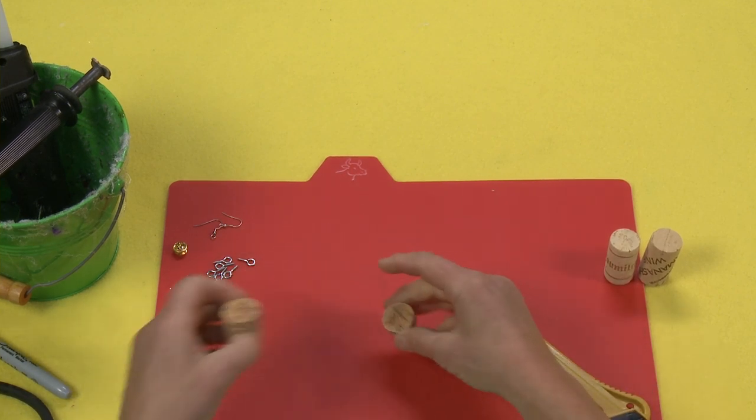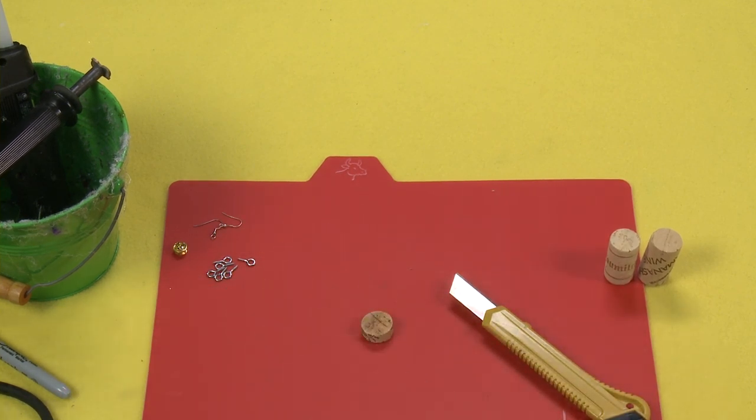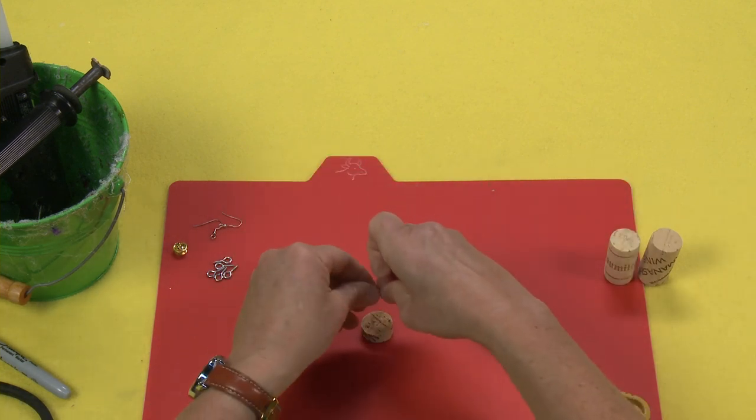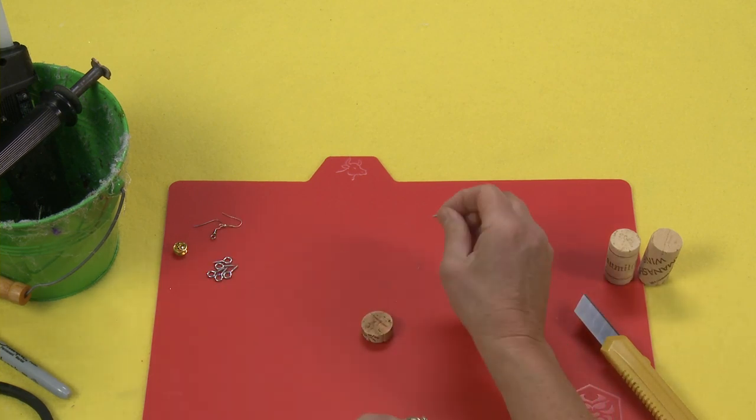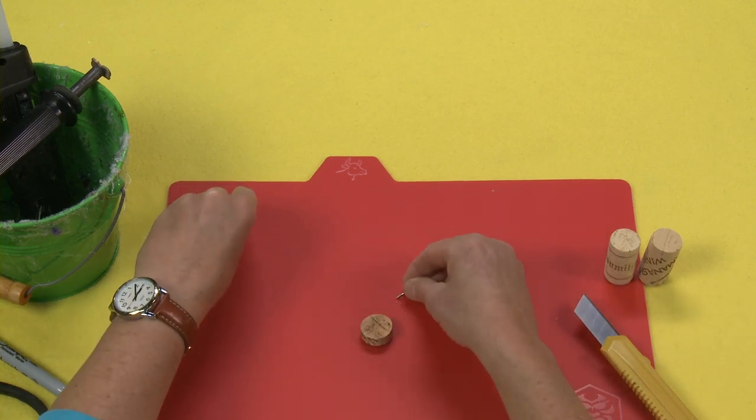So I'm going to be using 13/16 screw eyes just because I think that they're a really nice size, but you can play with your own sizes. I'm going to show you how to make the earrings here first.